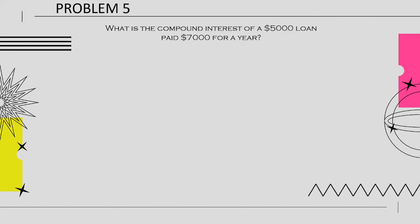For the last example: What is the compound interest of a $5,000 loan paid back as $7,000 for a year? All we have to do is subtract the present value from the maturity value to get the compound interest: $7,000 minus $5,000 equals $2,000. The compound interest is $2,000.